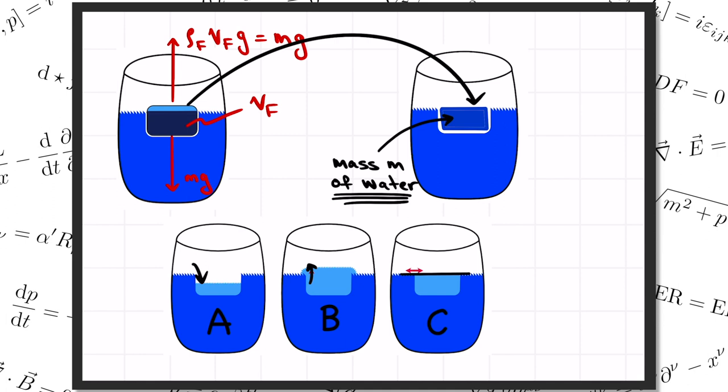To say it one more time in a sentence: the floating ice displaces a volume of water of the same total weight. But when the ice melts, it turns into exactly that amount of water, and so it fills up the same hole it had displaced to begin with.